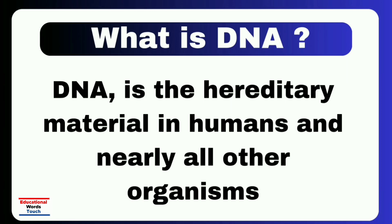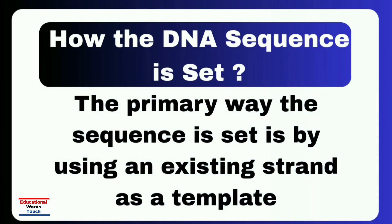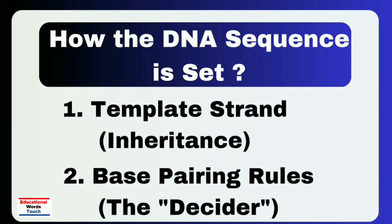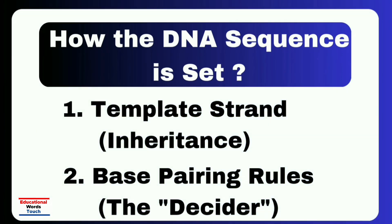Next I will discuss how the DNA sequence is set. The primary way the sequence is set is by using an existing strand as a template. There are two key mechanisms: the first is template strand inheritance, and the second is base pairing rules — the decider.